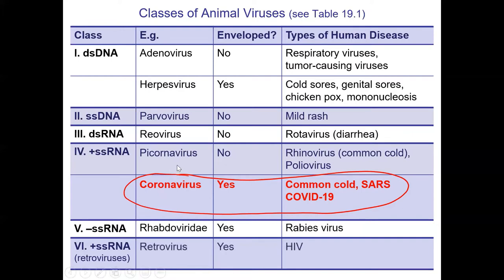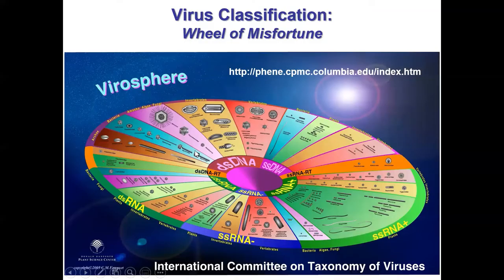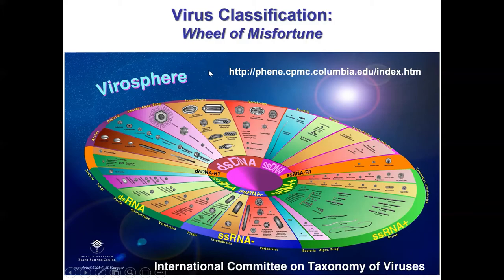Other single-stranded RNA viruses include rabies viruses and retroviruses like HIV. I found this classification poster - if you're interested, it shows there are lots of strategies to classify viruses: based on whether it's an animal, plant, vertebrate, or invertebrate virus; based on genome; or based on structure - whether it's enveloped or icosahedral. All of those terms are thrown around when we talk about virus classification.